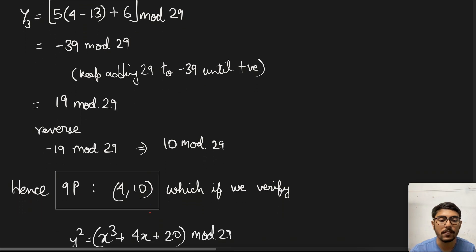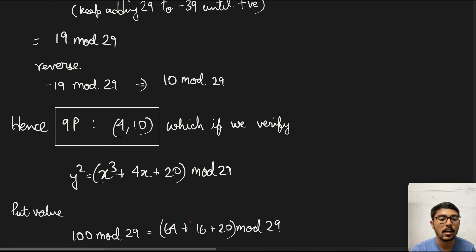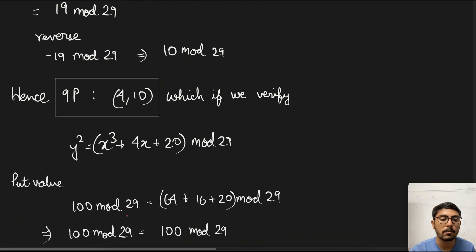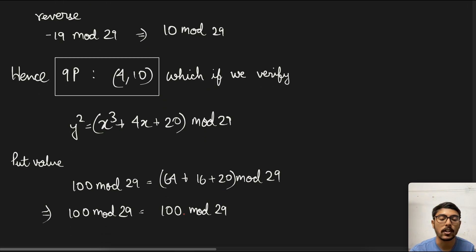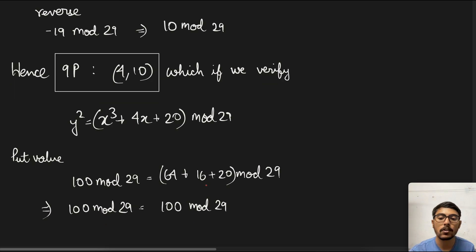We can verify: y² = x³ + 4x + 20 mod 29. LHS: 10² = 100 mod 29 = 13. RHS: 4³ + 4×4 + 20 = 64 + 16 + 20 = 100 mod 29 = 13. LHS equals RHS, so this point also lies on the elliptic curve. That's how you calculate any arbitrary point on the elliptic curve using the double and add algorithm, given a base point.